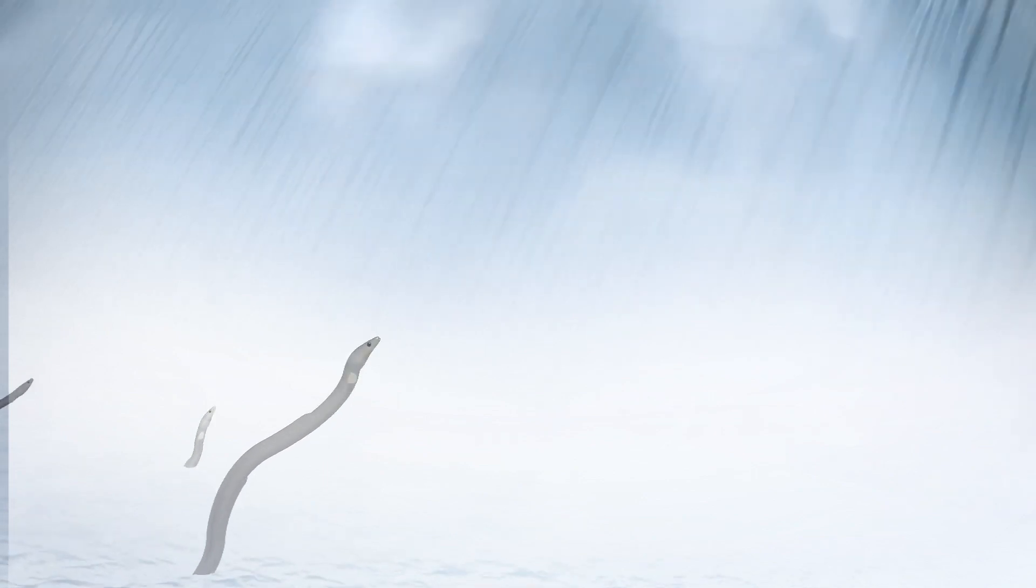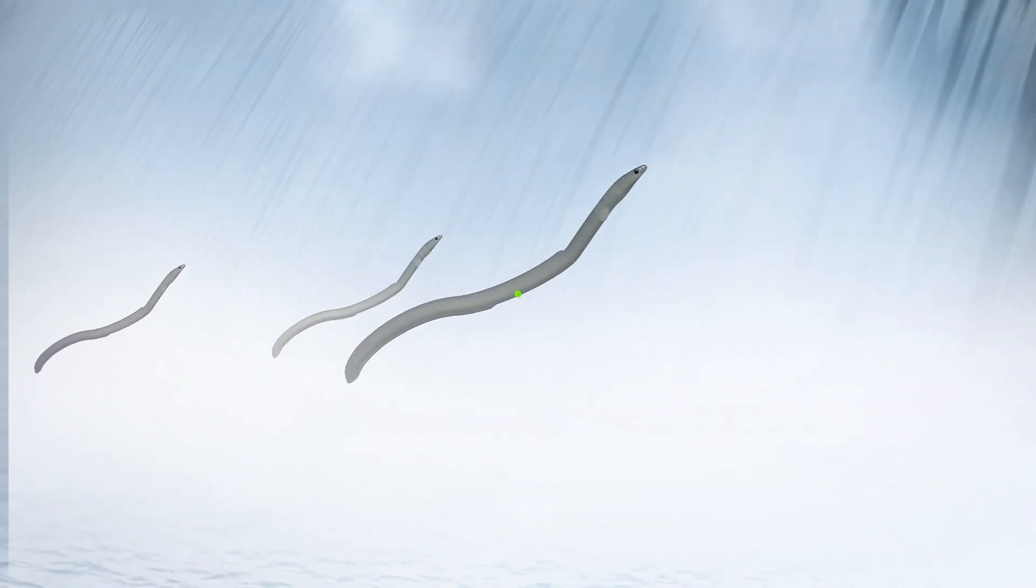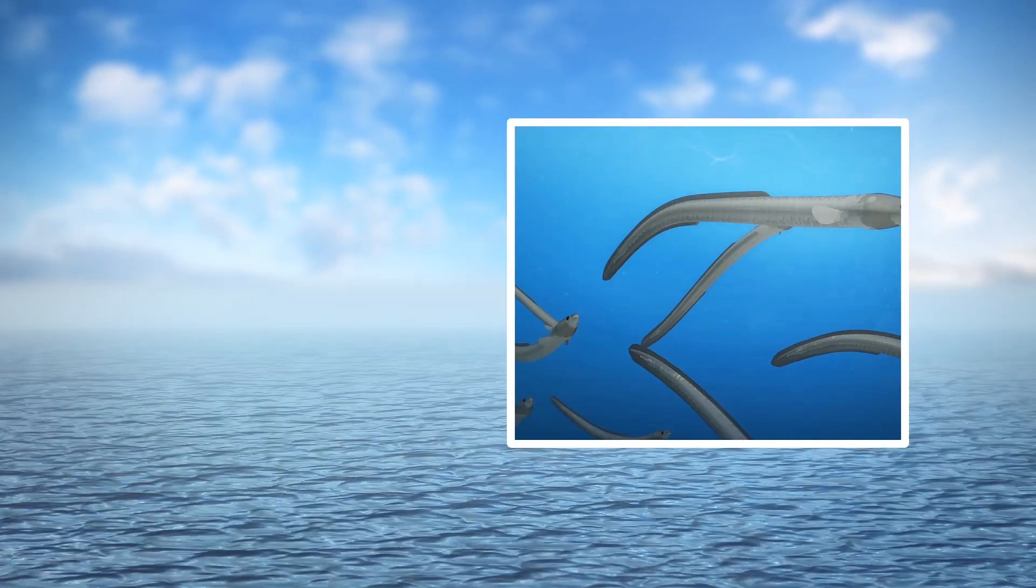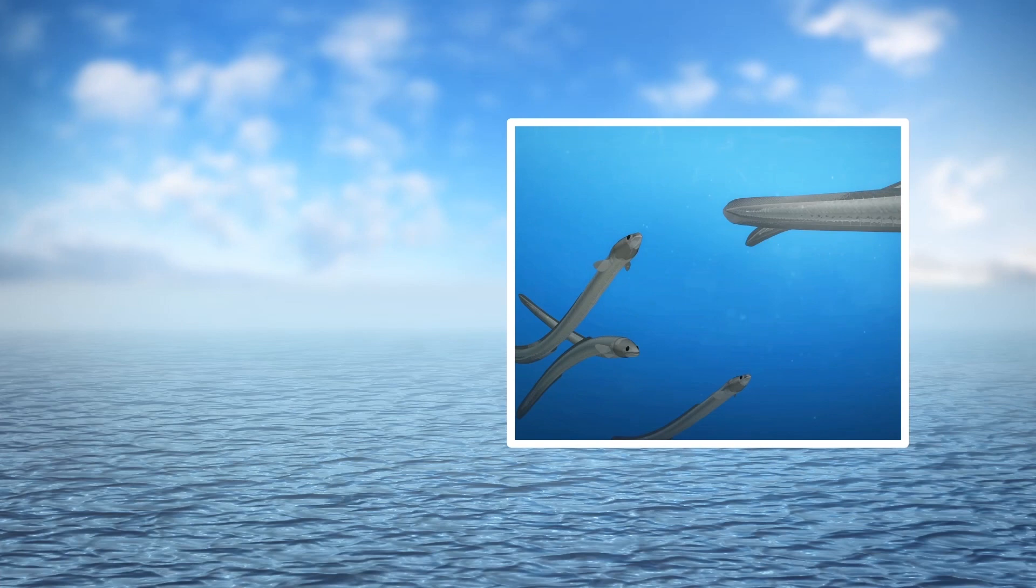The researchers mentioned in the study that this mechanism could be helpful to eels if they lose visual reference points as they move upstream during migration. The eel's magnetic compass could also be used years later when they are silver eels as they return to the Sargasso Sea to spawn and pass away.